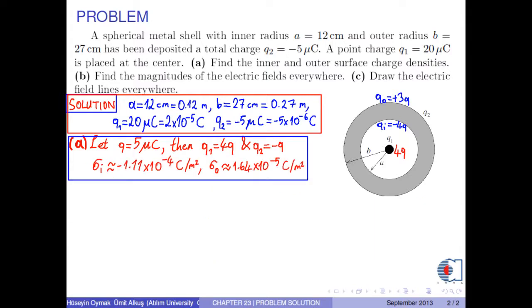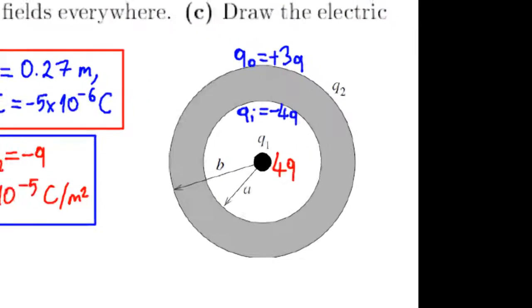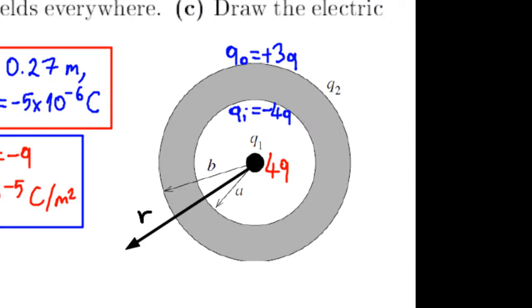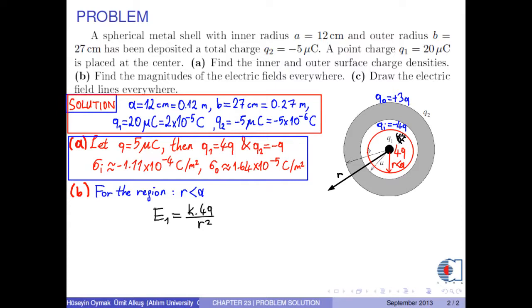Part B: find the magnitudes of the electric fields everywhere. In the first region, R is less than A, we have point-like charge 4Q. Therefore, the electric field is calculated as K times 4Q over R squared, or 4KQ over R squared.